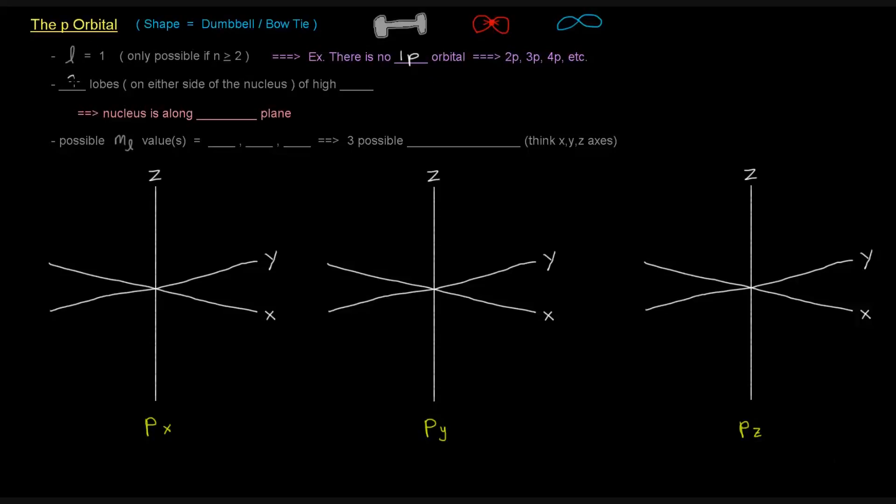So the p orbital basically has two lobes that are on either side of the nucleus. And each of those have high probability densities. The nucleus itself is along the nodal plane. So we don't have just a region that is a node in the way that we have with the s orbital. We have a plane that the electron cannot sort of lie on.